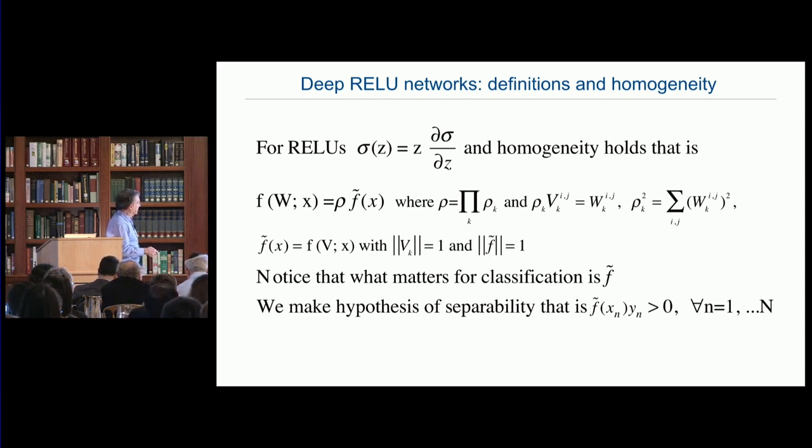So, forget this, because that's a notation that, but what is true is that Frobenius norm of the VK is one. And what matters for classification, as I mentioned before, in this case, F will have one output, is the normalized F. Because the sign will be the same. The sign is the only thing that matters. And the sign will be independent of the normalization. Is that clear so far?